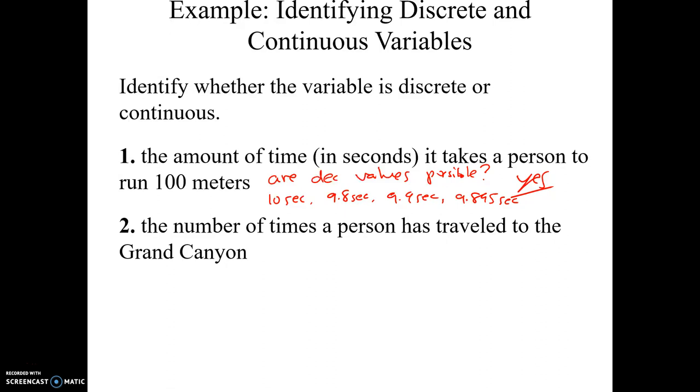The number of times a person has traveled to the Grand Canyon. So I can go 0 times to the Grand Canyon. I can go once, I can go twice, I can go 3 times. Can I go 1.5 times to the Grand Canyon? No. Like I either went or I didn't. Can I go 2.8 times to the Grand Canyon? Nope. I either went or I didn't. So because the only possibilities are counting numbers, this is going to be discrete.